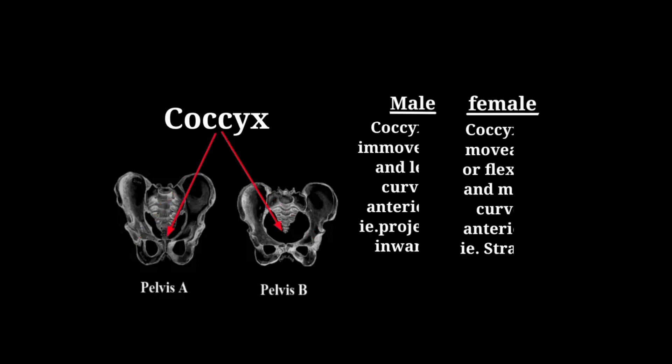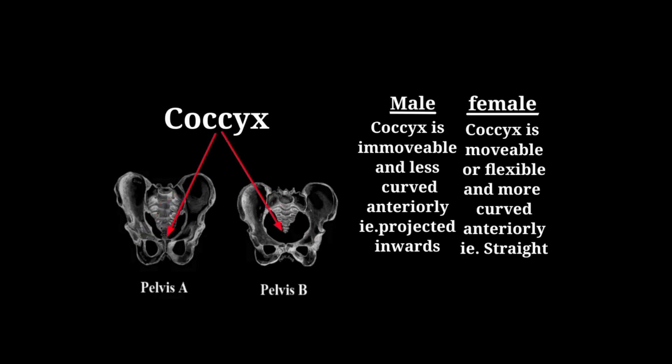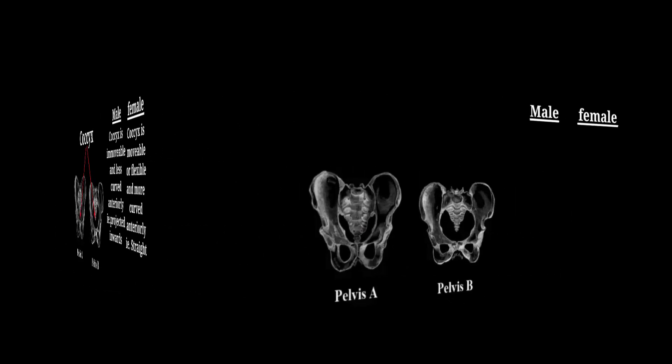The next point is the coccyx. In the male pelvis, the coccyx is immovable and less curved anteriorly, that is projected inwards. In the female pelvis, the coccyx is movable or flexible and more curved anteriorly, that is straight.